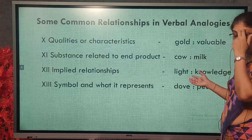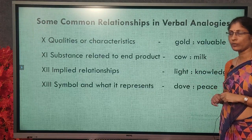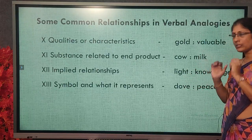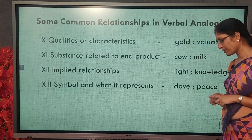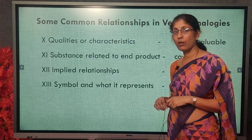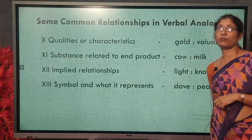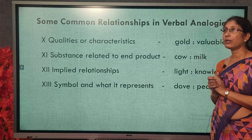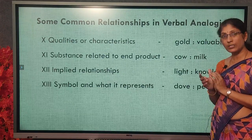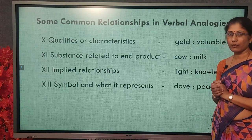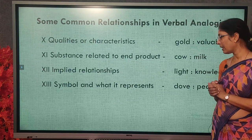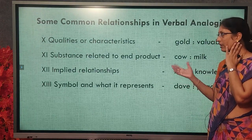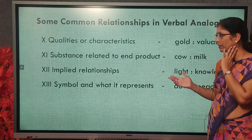Implied relationships — like the intuitive meaning earlier: light represents knowledge, no direct meaning but an implied one. Symbol and what it represents — a dove represents peace, an olive branch represents peace. Animals also represent symbols: a deer means innocent, a tiger or lion means violent. Generally there are 13 types of pairs given in exams; of course sometimes they may go beyond that. If we know these types and the relations, it will be easier for the next question also.